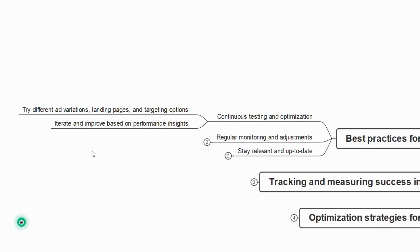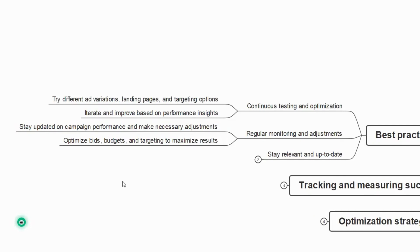The next best practice is regular monitoring and adjustments. Stay updated on campaign performance and make necessary adjustments while your ad is running. You can optimize bids, budgets, and targeting to maximize results. For example, if your ad budget is 500 rupees, you can increase or decrease the budget as needed.